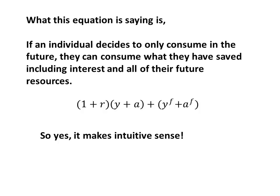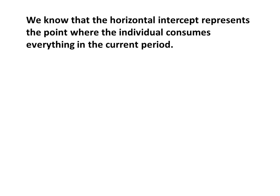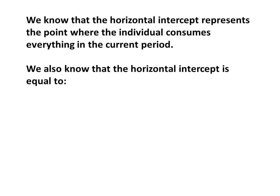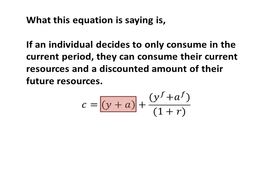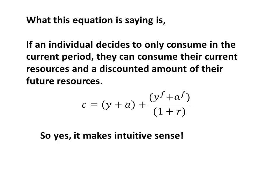Let's move to the horizontal intercept. We know that represents the point where individuals consume everything in the current period, meaning they are completely borrowing against their future income. The horizontal intercept is equal to Y + A + (YF + AF)/(1+R). What that equation is saying is that if an individual decides to only consume in the current period, they can consume their current resources Y plus A, plus they can also consume a discounted amount of their future resources. So yes, this makes intuitive sense.